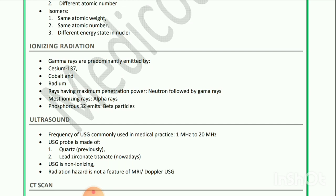Ultrasound: The frequency of ultrasound commonly used in medical practice is 1 MHz to 20 MHz. The ultrasound probe was previously made of quartz, and nowadays is made of lead zirconate titanate. Ultrasound is non-ionizing. Radiation hazard is not a feature of MRI or Doppler ultrasound.